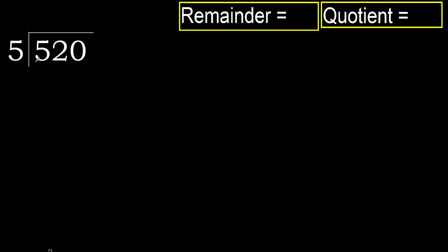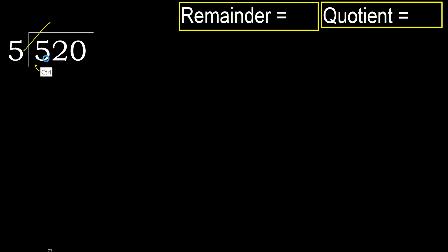520 divided by 5. 5 is not less, therefore we work with 5. 5 multiplied by which number is nearest to 5 but not greater? 5 multiplied by 2 is 10, which is greater. 5 multiplied by 1 is 5, which is not greater. So 5 minus 5 equals 0.